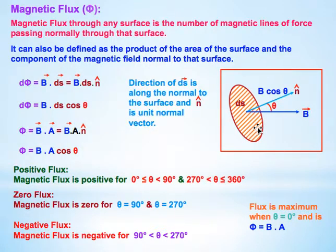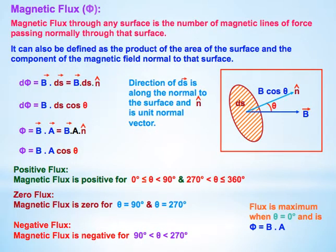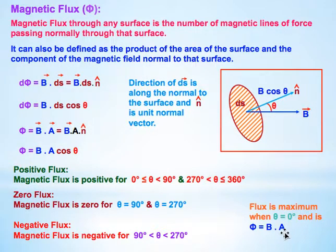For example, if we take θ = 180°, we get cos π = −1, so the magnetic flux is negative. Flux is maximum when θ = 0°, since cos 0° = 1, and cos 180° = −1. Therefore we get φ = B · A, and this is the mathematical treatment of magnetic flux.